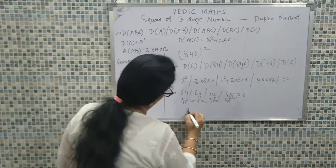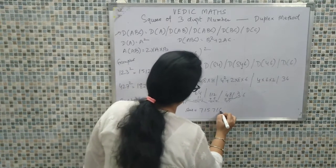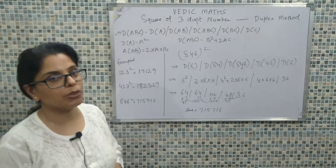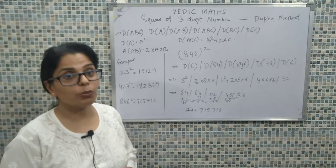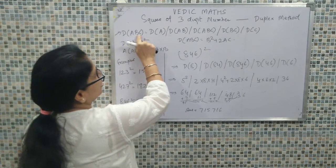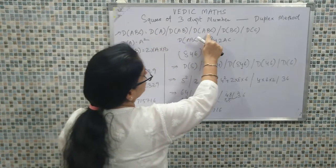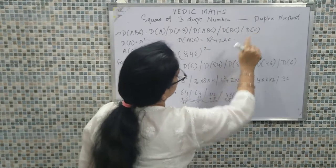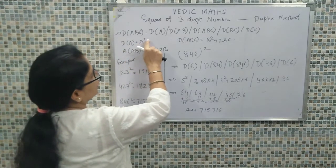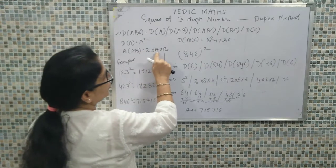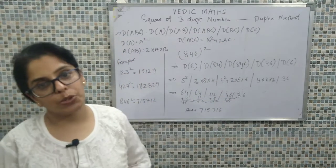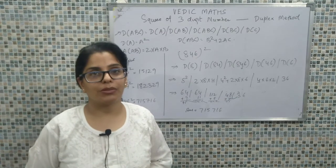Our answer is 715716. Summing up the discussion: for calculating the square of a three-digit number we use the Duplex concept, referred to as the Dvandva Yoga method. For a three-digit number ABC we compute duplex of A, AB, ABC, BC, and C — giving 5 segments. Duplex of A = A²; duplex of AB = 2AB; duplex of ABC = B² + 2AC. This method can be used to calculate the square of any three-digit number.